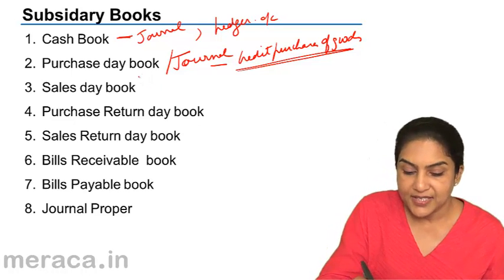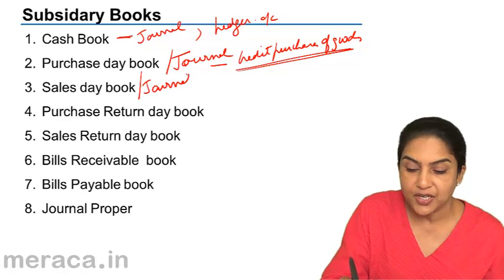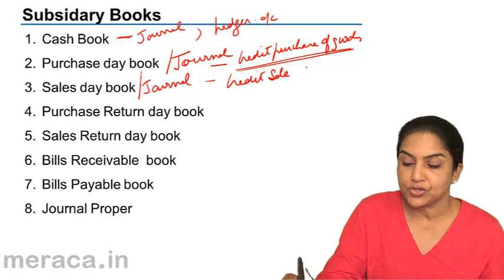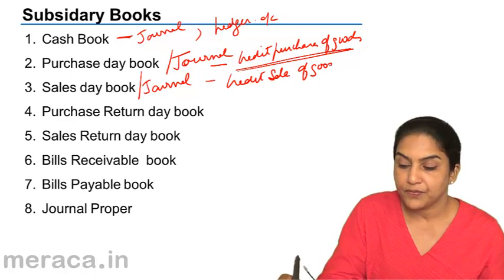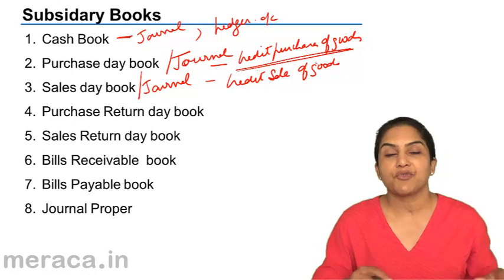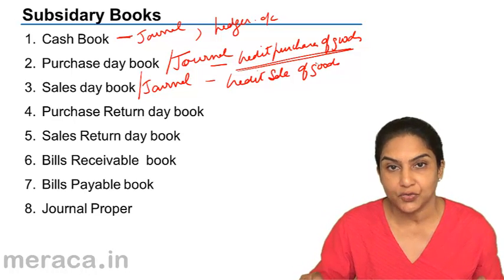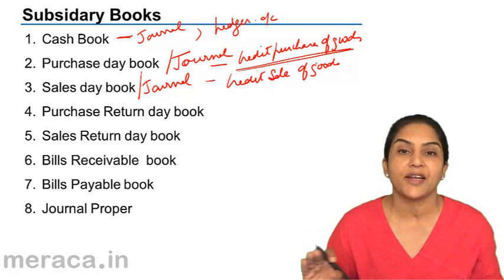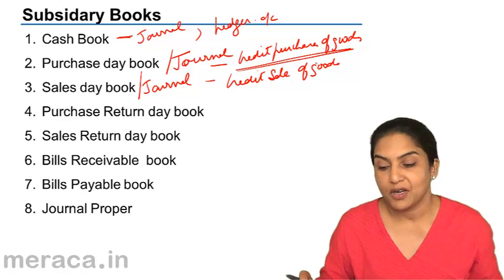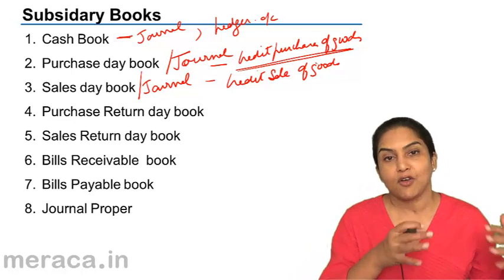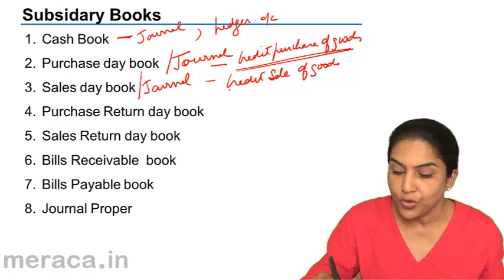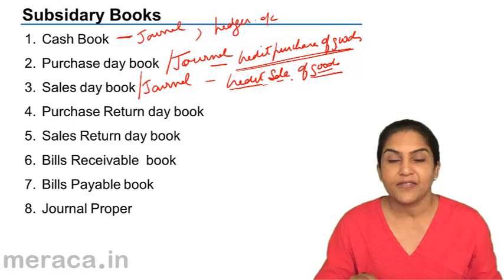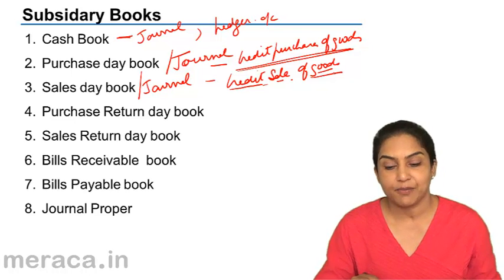Similarly, the sales day book, also called the sales journal, records all credit sales of goods. If we sell our old furniture, that is not a credit sale of goods — that is a credit sale of furniture. If we sell old newspapers, that is also not a sale of goods. We are talking only of credit sales of goods, and that is recorded in the sales day book or sales journal.